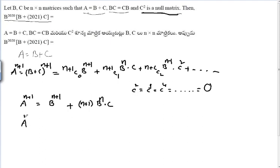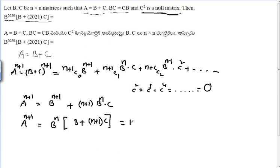Taking B^n as a common factor: A^(n+1) = B^n · (B + (n+1)C). The given target expression is B^(2020) · (B + 2021C).